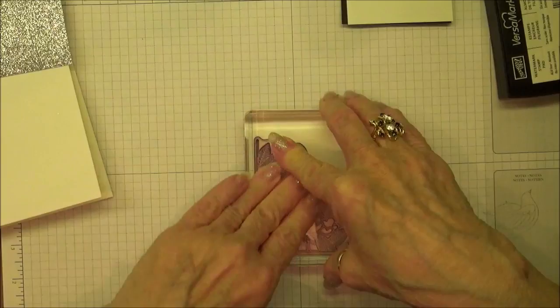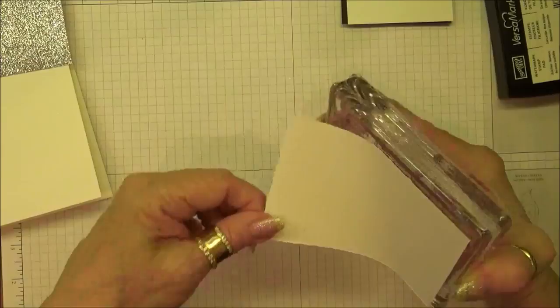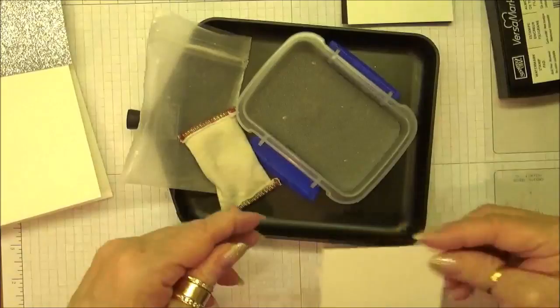I'm going to make sure that I get good pressure everywhere so that I'm able to transfer that ink uniformly to my cardstock. I'll just take that off and now we can get our embossing powder and go ahead and sprinkle that on.